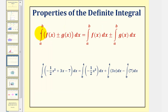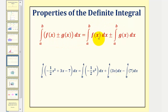Next, we have the integral of f of x plus or minus g of x, integrated from a to b, is equal to the integral of f of x from a to b, plus or minus the integral of g of x from a to b. So if we're integrating a sum or difference of functions, we can break it up into separate integrals. As an example, if we're integrating this quadratic function from zero to four, because we have a sum or difference of three terms, we can write this as a sum or difference of three separate integrals.